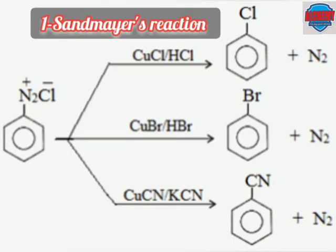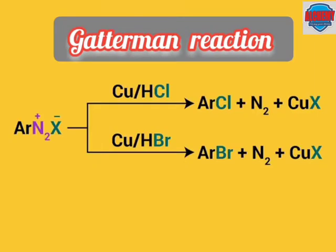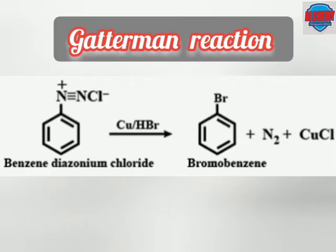Three examples of Sandmeyer's reaction are given here. In each case, chlorine, bromine and cyanide replace the N2Cl group to form chlorobenzene, bromobenzene and cyanobenzene respectively. In the Gartermann reaction, the halogen attaches with the aryl group to form aryl halide along with nitrogen and copper halide. For example, bromine from HBr combines with the aryl group to form bromobenzene along with nitrogen and copper chloride.